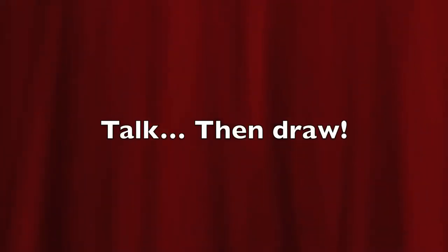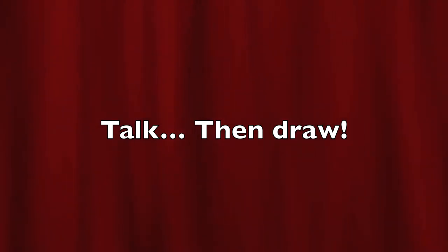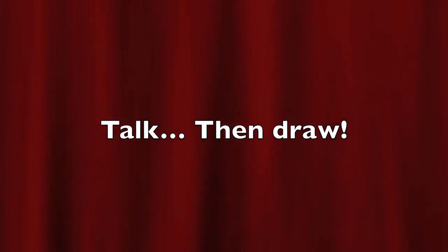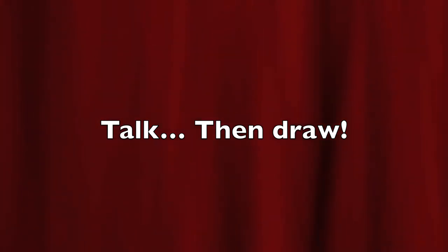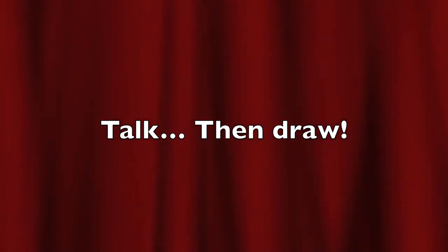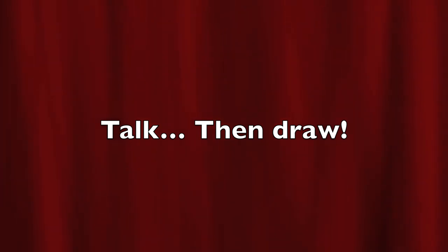Before we get started drawing, turn to the people at your table and take one minute to talk about the ideas you have for your castle. Your job today is to design a castle with architectural details that will protect whoever is inside. Talk about who's going to live in your castle and what details you will show. As you begin to draw, remember to do your whole drawing in pencil. And when you're finished in pencil, you can trace over your pencil lines with Sharpie. Good luck, artists — I can't wait to see what you make!